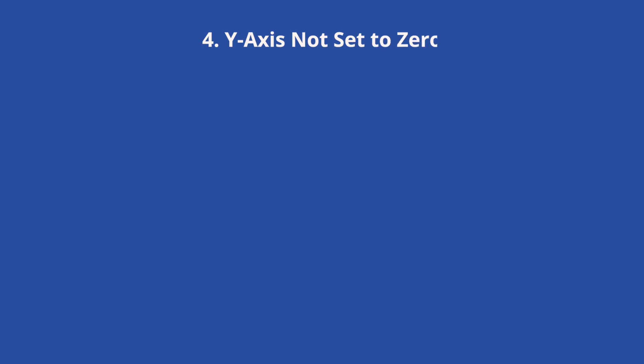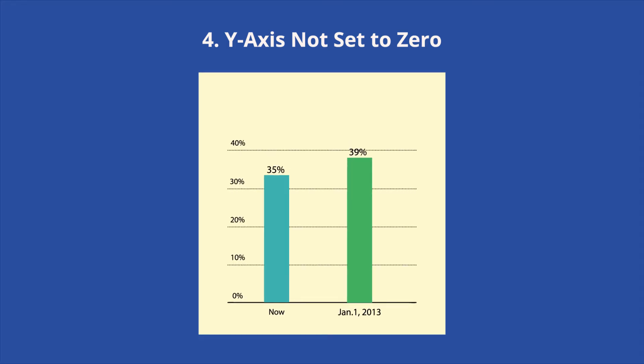Fourth, the y-axis is not set to zero. Typically, the y-axis of a graph will start at zero. However, truncated graphs do not begin at zero, which can make an insignificant change appear larger than it is. This can lead people to the wrong conclusions about the data. After all, most people will simply accept information without question and not calculate the actual numerical difference.